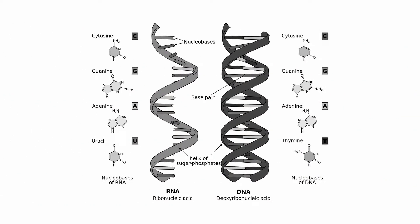Remember, DNA and RNA have four base pairs that connect to the sugar phosphate backbone: adenine, guanine, thymine — or uracil for RNA — and cytosine.